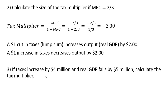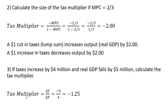Example 3. If taxes increase by $4 million and real GDP falls by $5 million, calculate the tax multiplier. We recognize that the tax multiplier equals the change in real GDP over the change in taxes. GDP is falling by $5 million — so minus 5 — from a $4 million increase in taxes. So our tax multiplier is minus 1.25.